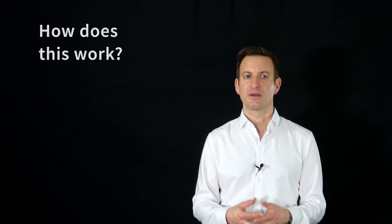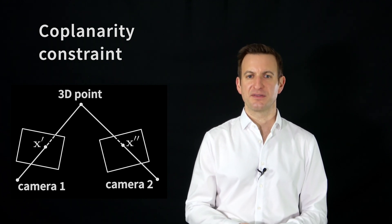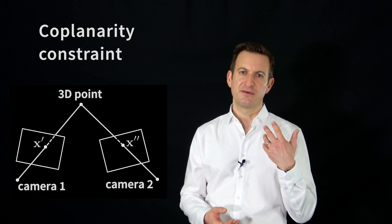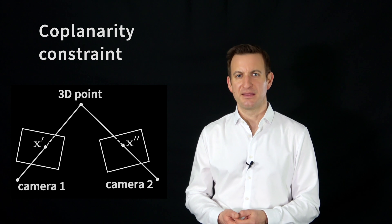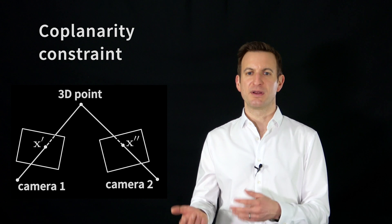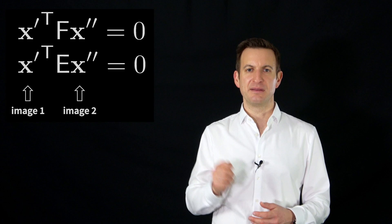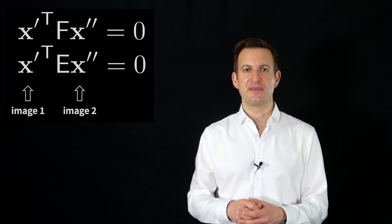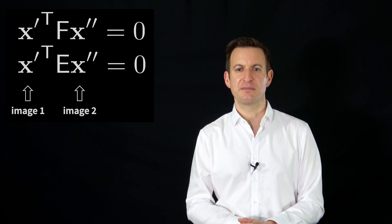So how does it work? What sits behind the eight-point algorithm? The eight-point algorithm is based on the so-called coplanarity constraint that can be expressed with the fundamental matrix or the essential matrix. If we have a point in image one and a point in image two, here indicated by the different primed variables x — an xy pixel coordinate in image one and image two — we can describe it as this product of the point in image one, the fundamental or essential matrix, and the point in the other image, which must equal zero. This is the so-called coplanarity constraint that must hold.